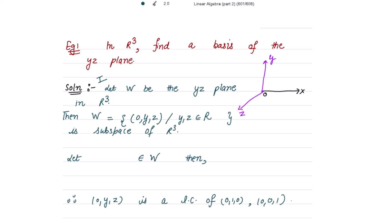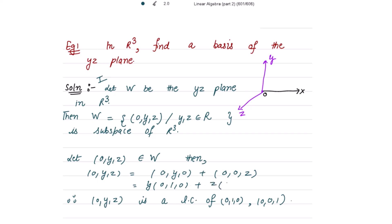To find the basis for the YZ plane, take one element from W: that element is (0, y, z). We can write (0, y, z) as the linear combination of (0, y, 0) plus (0, 0, z). Taking y common gives y times (0,1,0), and z times (0,0,1). So (0, y, z) is a linear combination of (0,1,0) and (0,0,1).